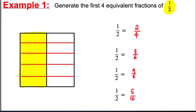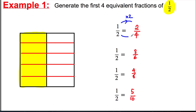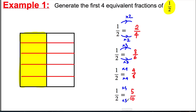Now you'll notice that I can get these using multiplication. A half — if I multiply the top by two and the bottom by two, I get two quarters. If I multiply the top by three and the bottom by three, I get three sixths. And similarly, multiplying by four gives four eighths, and multiplying by five gives five tenths.